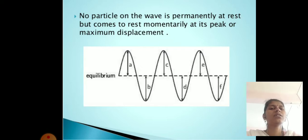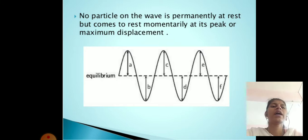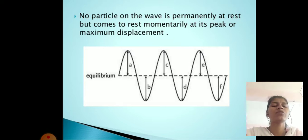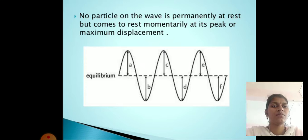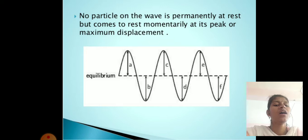No particle on the wave is permanently at rest, but comes to rest momentarily at its peak or maximum displacement. The particles attain maximum velocity when they pass through their mean position. All vibrating particles of the medium have the same amplitude, period, and frequency.